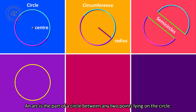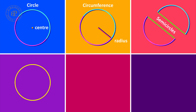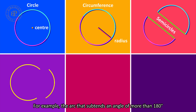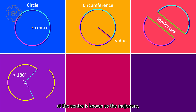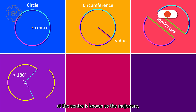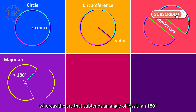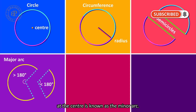An arc is the part of a circle between any two points lying on the circle. For example, the arc that subtends an angle of more than 180 degrees at the center is known as the major arc, whereas the arc that subtends an angle of less than 180 degrees at the center is known as the minor arc.